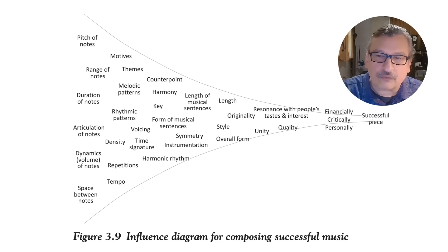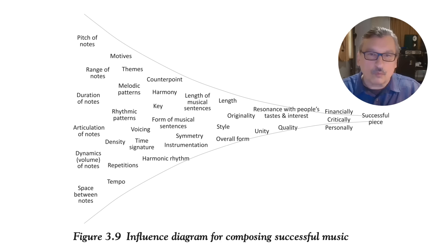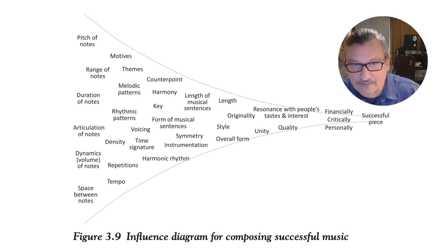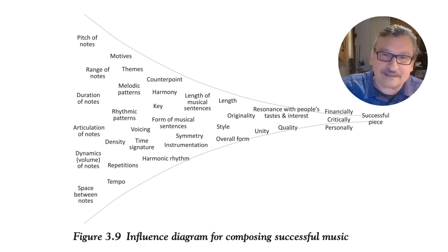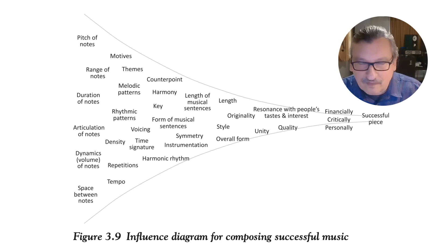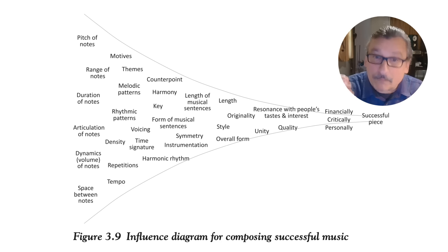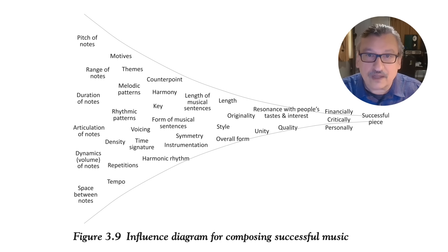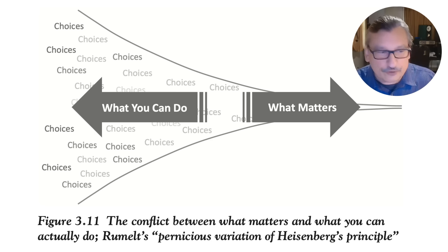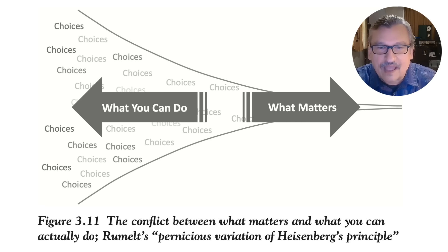In music, your goal is to write a beautiful piece. Work back from that and you get a diagram that looks just the same — all you can do is decide notes, who plays them, and when. The killer problem is: how do we decide to take all those actions and decisions such that they will lead to the outcome we want? What you can do versus what matters are at opposite ends. This is the ultimate description of the killer problem.